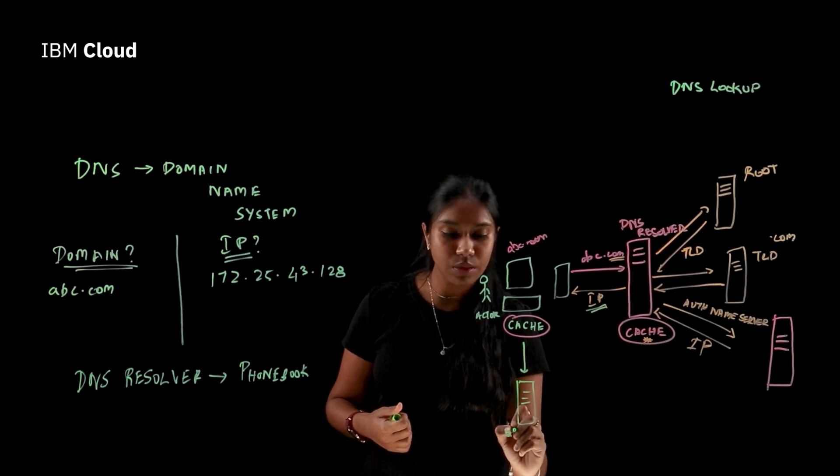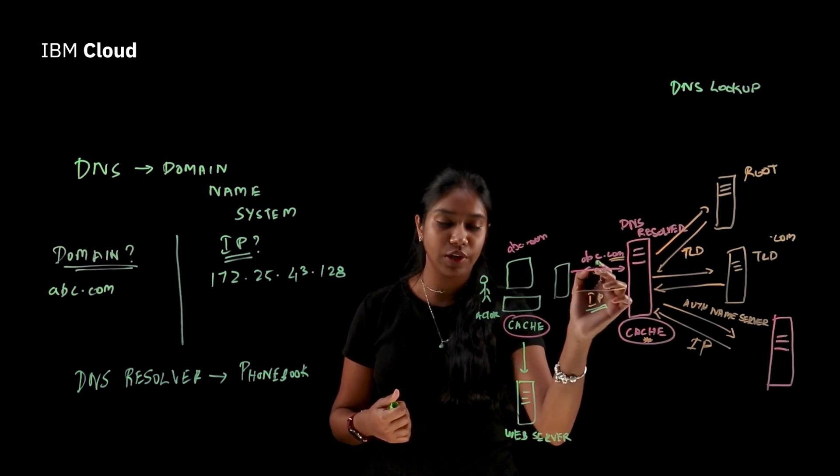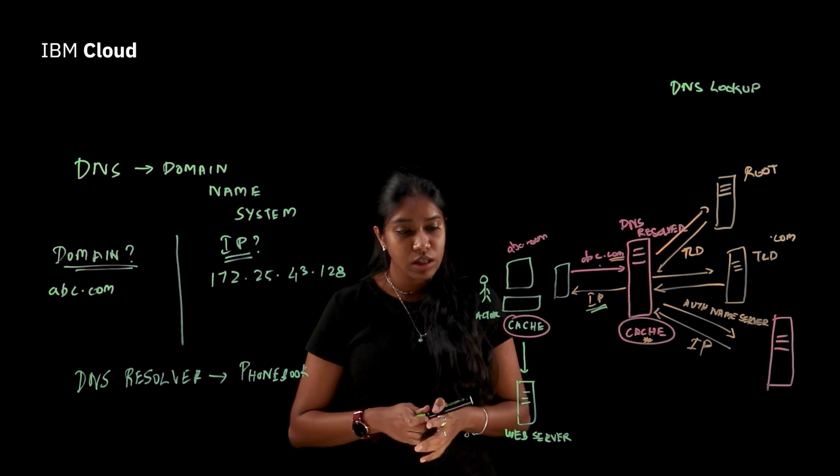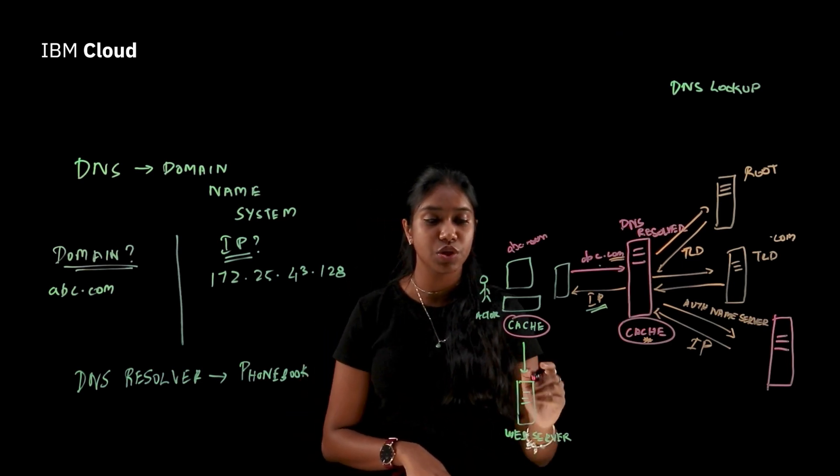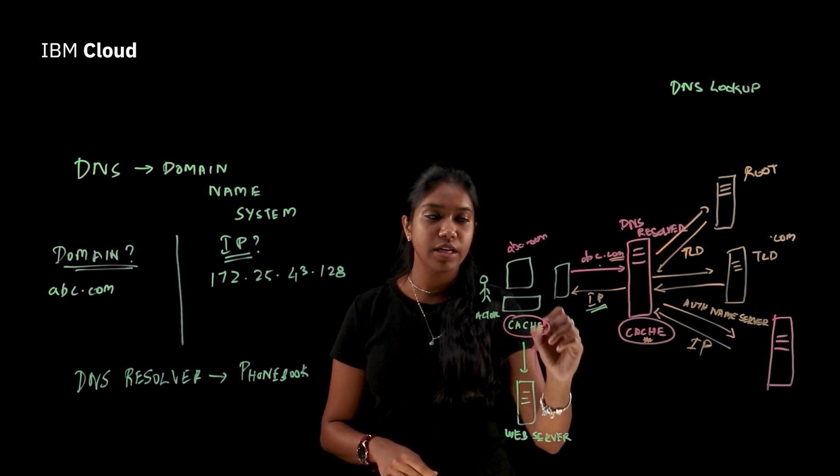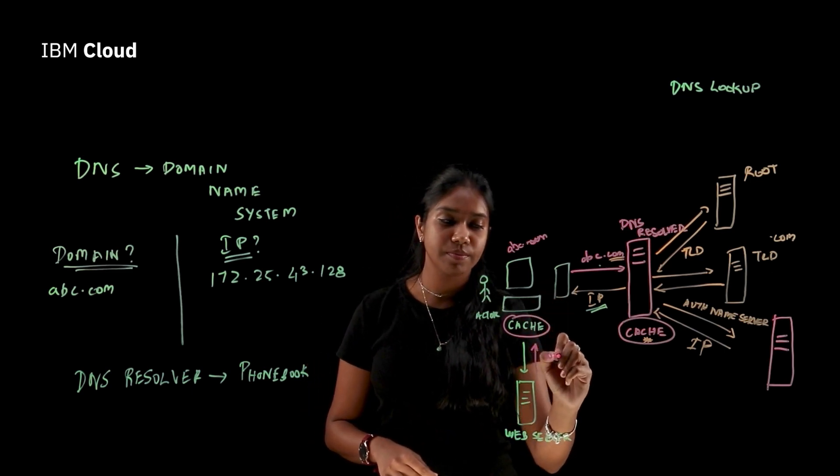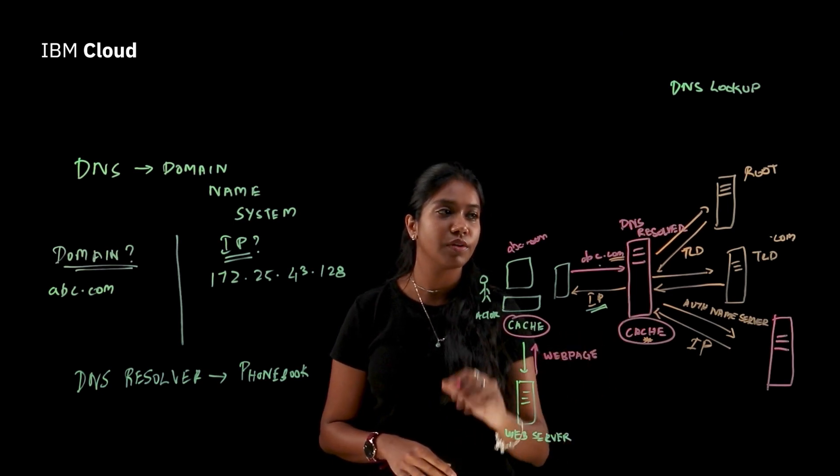So this is the web server of any particular website that you're probably accessing. In this case, it is going to be abc.com. So now the web server has all the content that is needed to display in your web page. What we render back is the content of your web page.